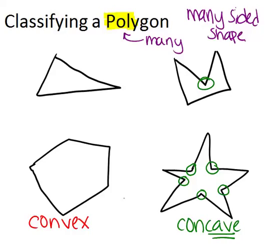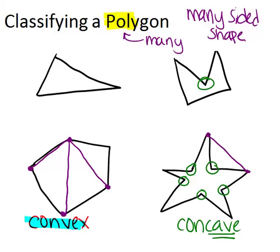Otherwise, it's convex. You'll spend most of your time focused on convex polygons in geometry. What makes a polygon convex, technically, is if you can take any two vertices on the polygon and connect them with a line, and that line stays inside the polygon, then it's convex. So in this polygon, it's convex because any two points that I pick that are vertices, if I connect them, that line is inside the polygon. Whereas if I go over to the star-like polygon and pick these two vertices and connect them with a line, that line has left the polygon. So that's the technical definition of what makes a shape convex versus concave.